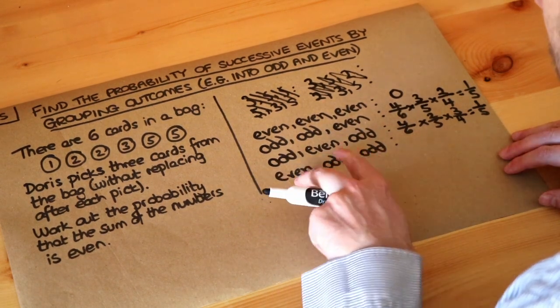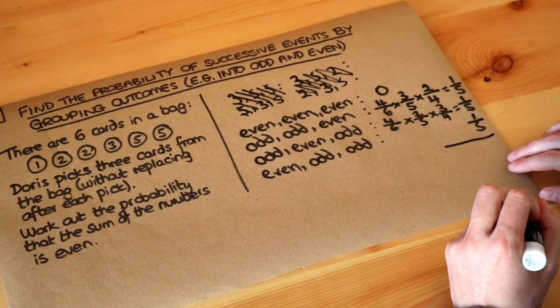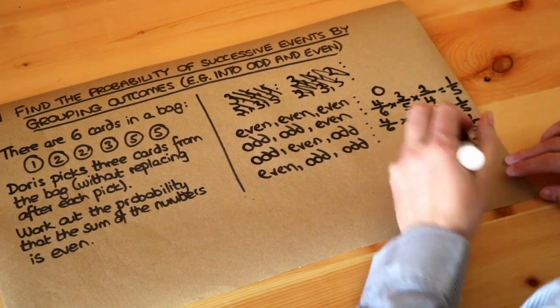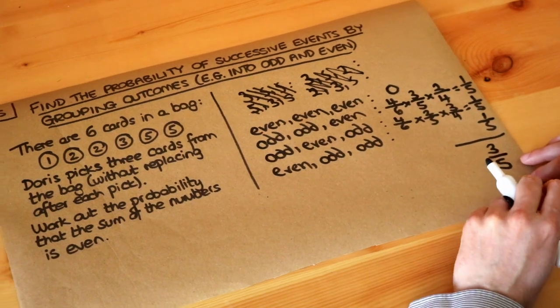And again, the last one, we've got two odds and an even, so that's going to be a probability of a fifth again. And then we add those up, so we add these three probabilities up, we get a final probability of three fifths, and that is the final answer.